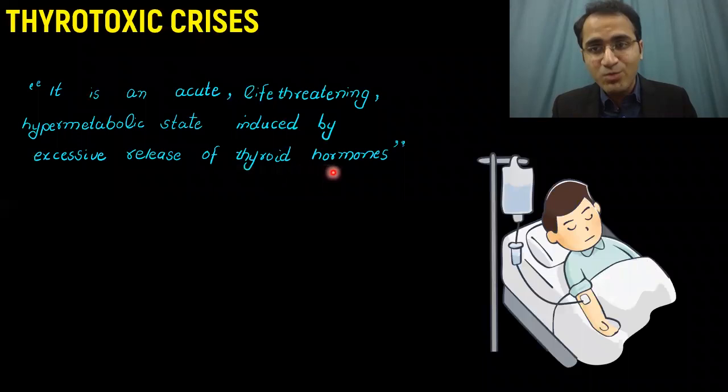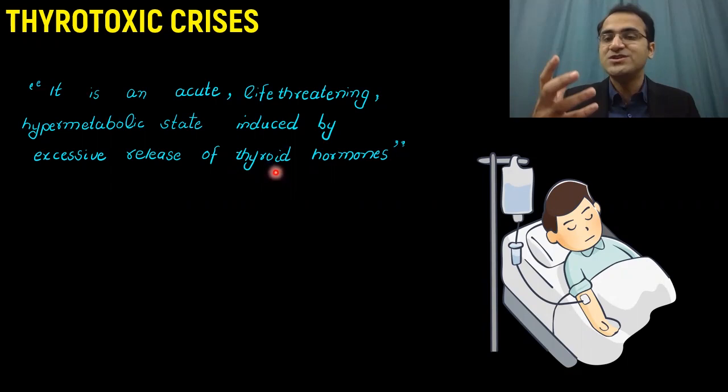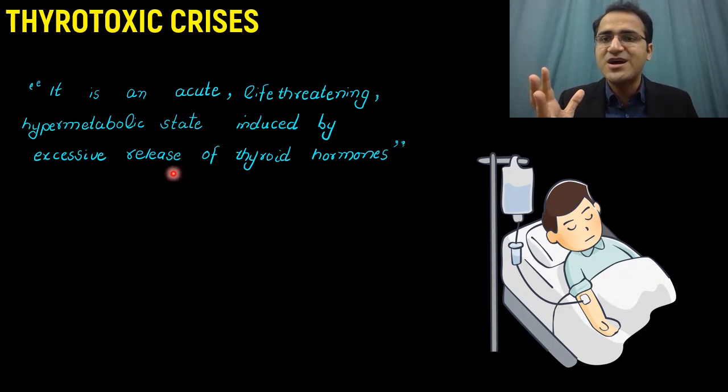As we know, thyroid hormones maintain the metabolism of the body — they run the metabolic machinery of the body. In thyrotoxic crisis, as the name shows, there is excessive release of thyroid hormone which results in a hypermetabolic state, and that hypermetabolic state is life-threatening and sudden acute.